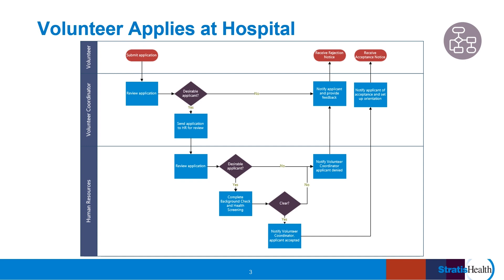Circles or ovals represent start and end points, squares or rectangles represent action steps, diamonds represent decision points, and arrows direct the flow of events. In diagrams with horizontal lanes such as this, each subsequent step generally should be one step further to the right. Walking through this diagram shows that the volunteer first submits an application. It is sent to a volunteer coordinator who reviews the application and determines if the individual is a desirable candidate. If not, the volunteer coordinator reaches out to the candidate to provide feedback and let them know they have not been selected, and the process ends.